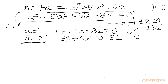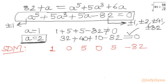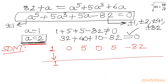Using synthetic division with root 2, I write all coefficients of the quintic equation: 1, 0, 5, 0, 5, negative 82. Bringing down 1, multiply by 2 gives 2; adding to 0 gives 2; multiply by 2 gives 4, adding to 5 gives 9; multiply by 2 gives 18, adding to 0 gives 18; multiply by 2 gives 36, adding to 5 gives 41; multiply by 2 gives 82, adding to negative 82 gives 0. The resulting quartic is a to the power 4 plus 2a cube plus 9a squared plus 18a plus 41 equals 0.